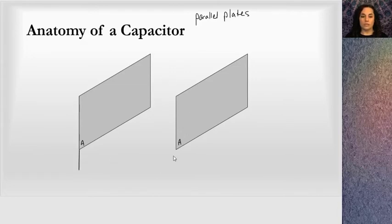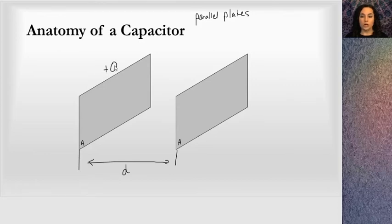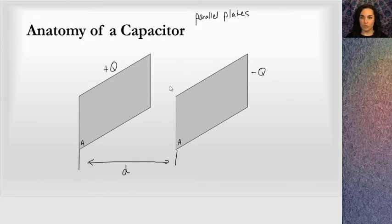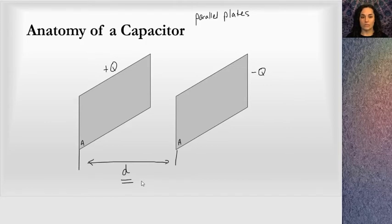The other thing we will be concerned with is the distance between these two plates, and that is called D. When we think about what we're going to do with the capacitor, we're going to put a positive charge on one plate and a negative charge on the other plate. The distance becomes important because charges separated by a distance are going to have an electric field between them, a voltage between them, and electric potential energy — all of those terms depend on the distance between charges. So it's no surprise that the distance between the plates is going to be important.